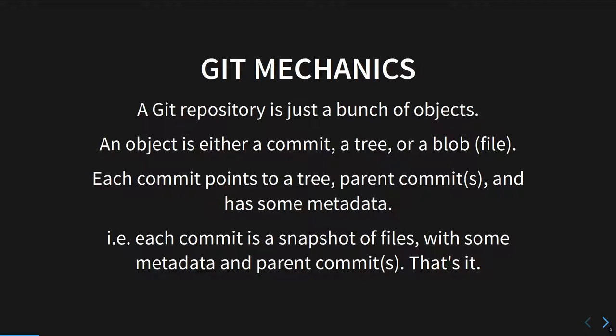Git is a snapshot-based version control system. So how does git actually store the data? At the high level, a git repository is just a bunch of objects, and these objects have a SHA-1 hash based on their contents.